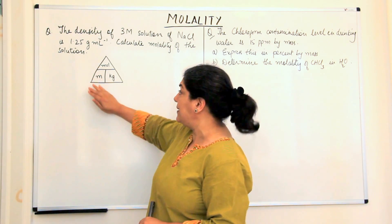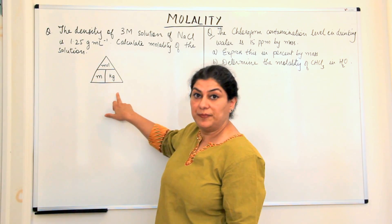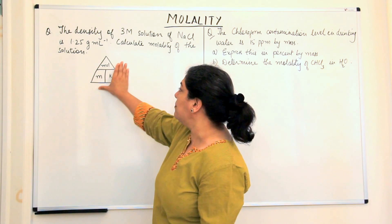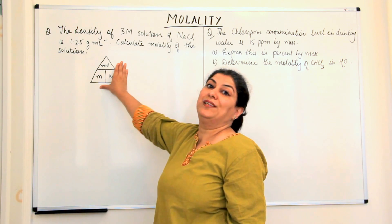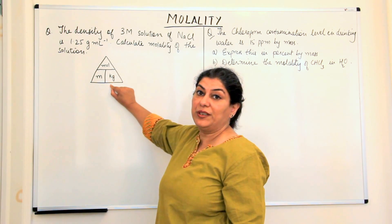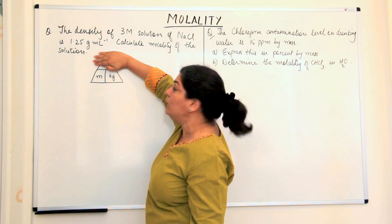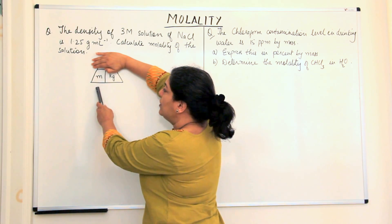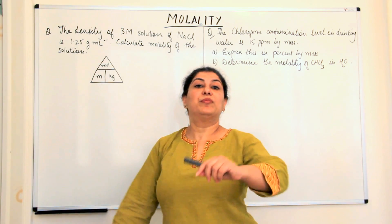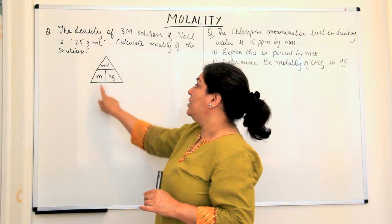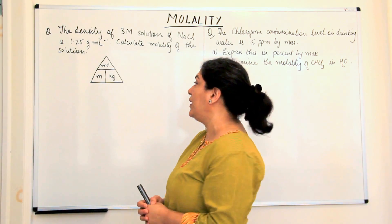If you've been asked the molality, molality would be moles of solute divided by kilograms of solvent. If you're asked the mass of the solvent in kilograms, it would be moles of solute divided by the molality. If you're asked the number of moles of solute, it would be molality multiplied by the mass of the solvent in kilograms. This is how you use the triangle to arrive at your answer.